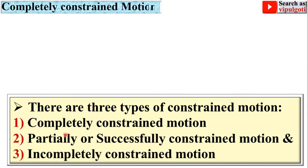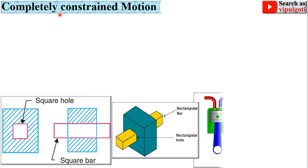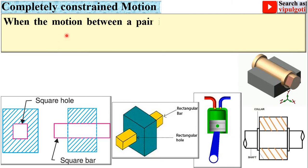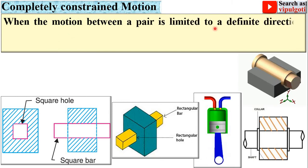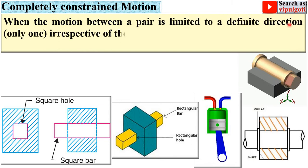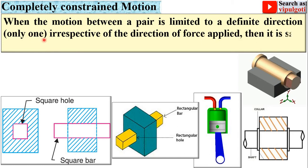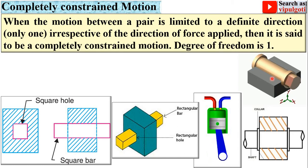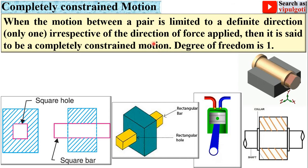Let's start from the first: completely constrained motion. When the motion between a pair is limited to a definite direction — only one direction — irrespective of the direction of the force applied, then it is said to be completely constrained motion. In this case the degree of freedom is one.